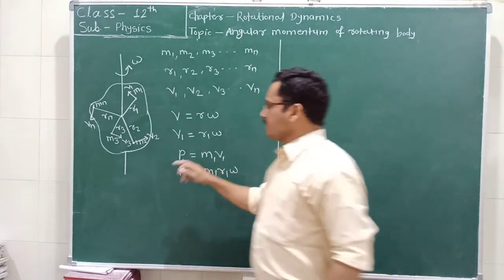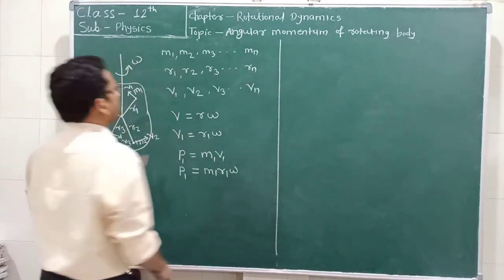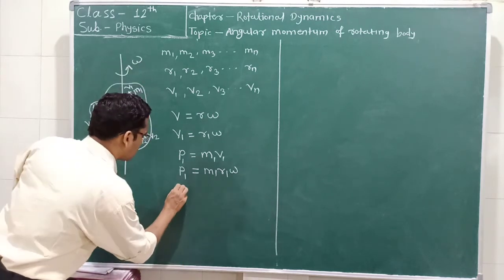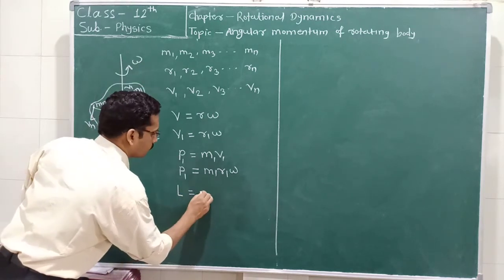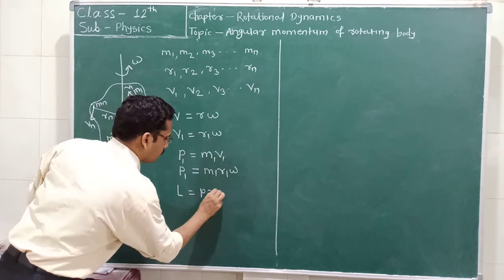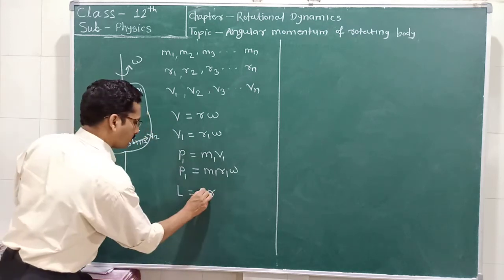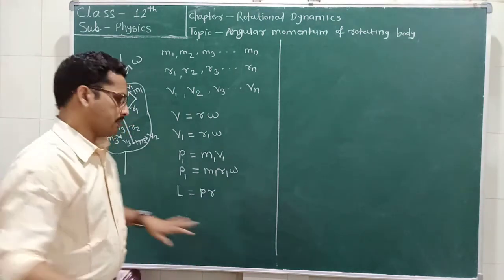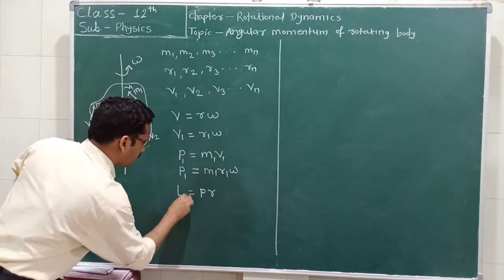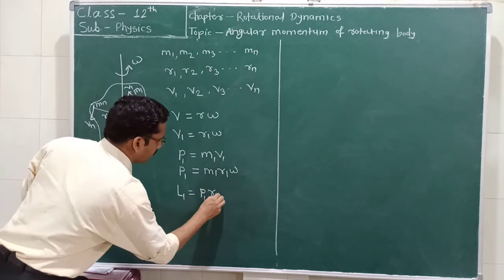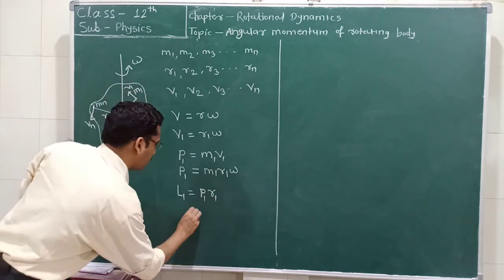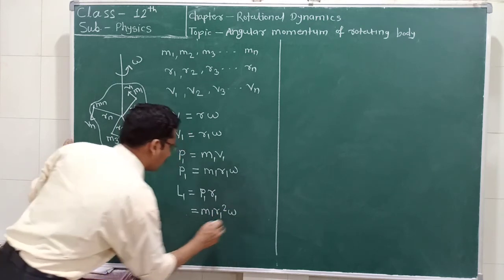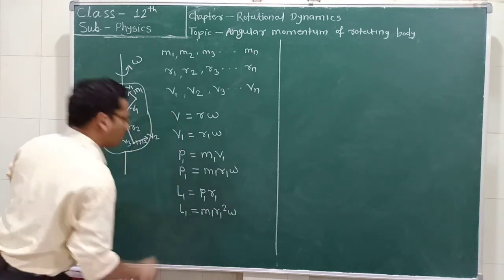From this relation, we derive the angular momentum. Angular momentum L is equal to P into R. Therefore, the angular momentum of the first particle, L1, is equal to P1 multiplied by R1. Substituting, L1 is equal to M1 R1 squared into omega.